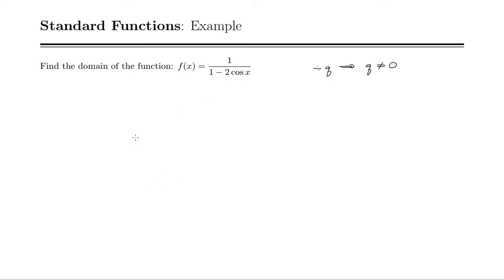So we're dividing here by 1 minus 2 cosine of x, and that thing cannot equal 0.